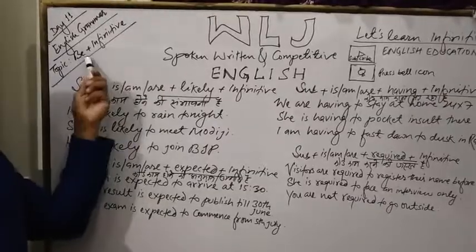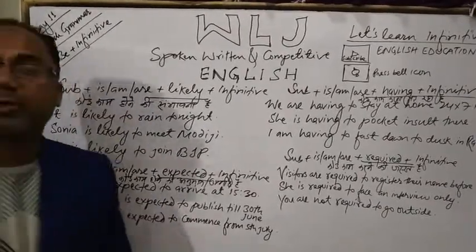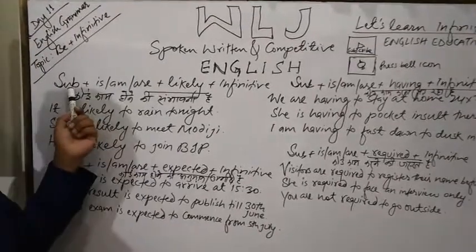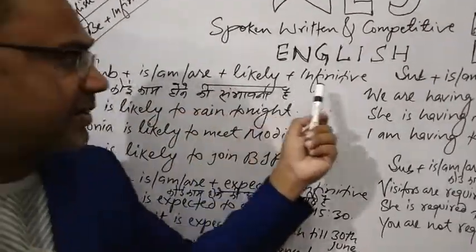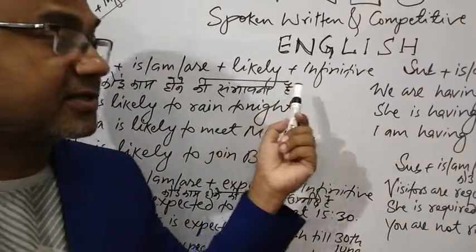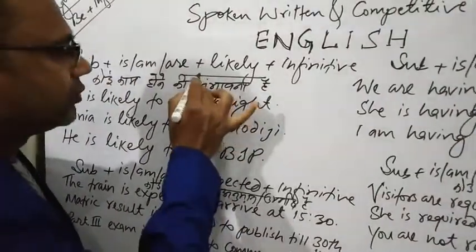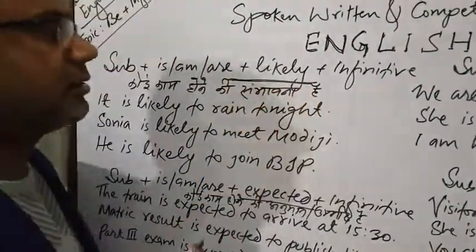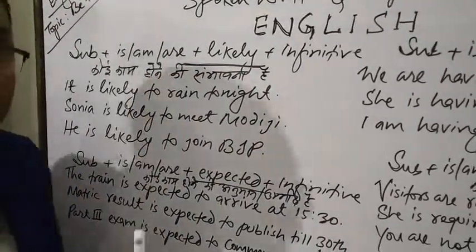Be means 'is/am/are' and infinitive means 'to + verb'. The structure is: Subject + is/am/are + likely + infinitive. Earlier we had discussed about some structures. Now here, 'likely' is one adjective — it means 'more likely'.